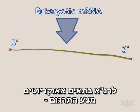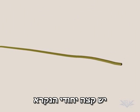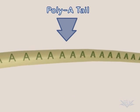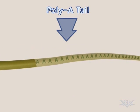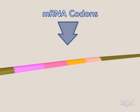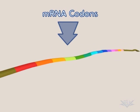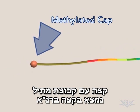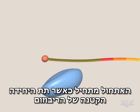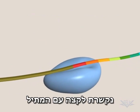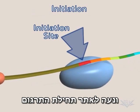Eukaryotic mRNA, the substrate for translation, has a unique 3' end called the polyA tail. mRNA also contains codons that will encode for specific amino acids. A methylated cap is found at the 5' end. Translation initiation begins when the small subunit of the ribosome attaches to the cap and moves to the translation initiation site.